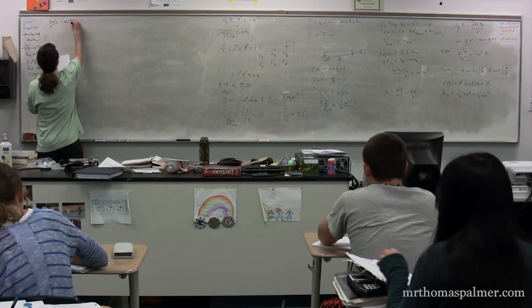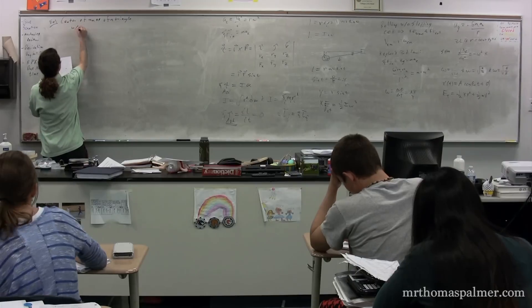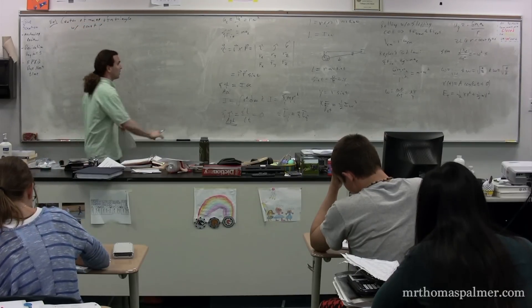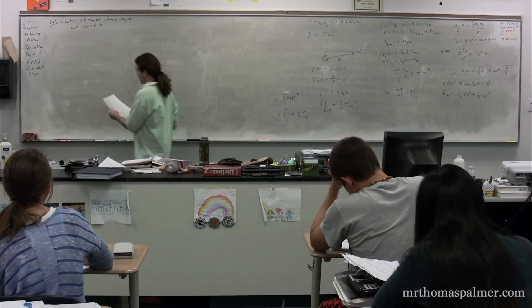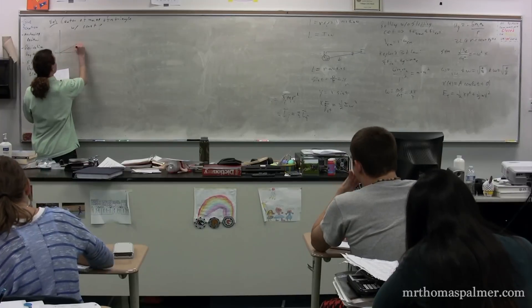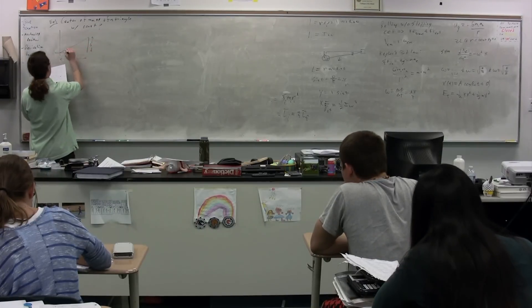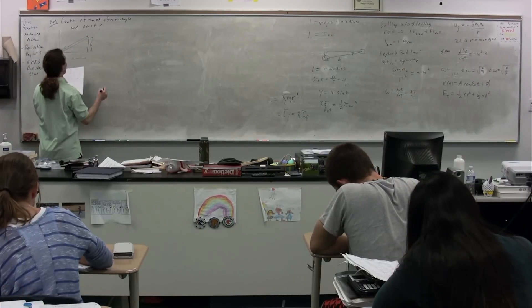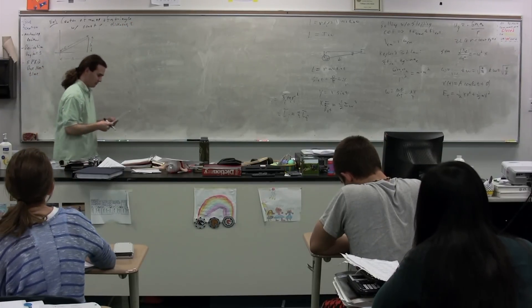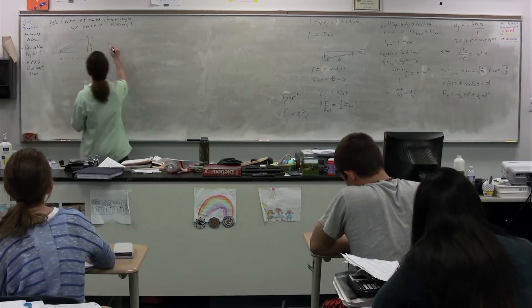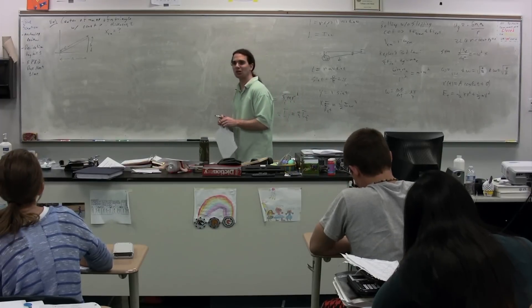We are going to figure out the center of mass of a triangle with a constant volumetric mass density. We have a triangle that looks like this, we have side A, side B, we'll call the hypotenuse C just for completeness, and it has a thickness of T in this direction. Our goal is to figure out the X center of mass. Step one, write out the equation for the center of mass along the X direction.